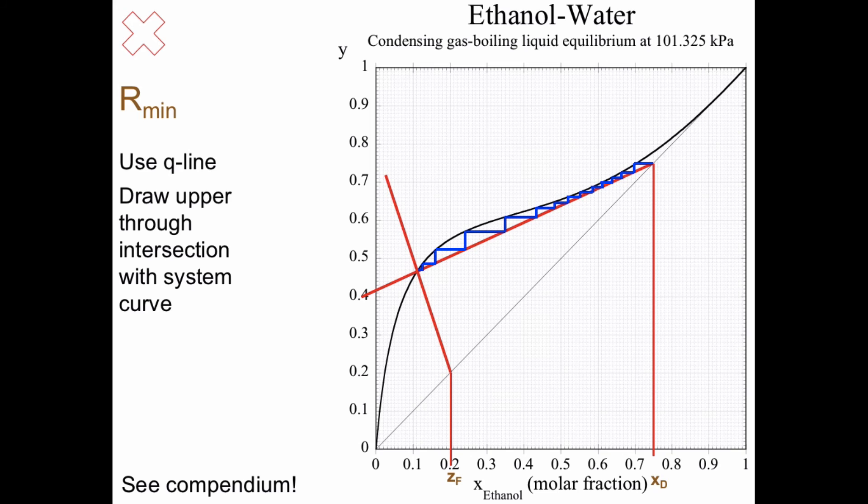And you can't pass this point here, right? So you get an infinite number of triangles, an infinite number of ideal stages.